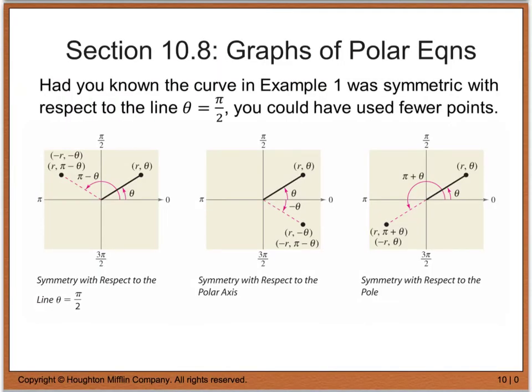Just as with rectangular curves, sometimes it's easier or more convenient to only plot half the points if we know that some type of symmetry is involved. The same case is true when we are dealing with polar equations. If we look back at Example 1, we saw that it was symmetric with respect to the line theta equals pi over 2. We know that because when we look at the line theta equals pi over 2, that was the center or the axis of symmetry for our curve.